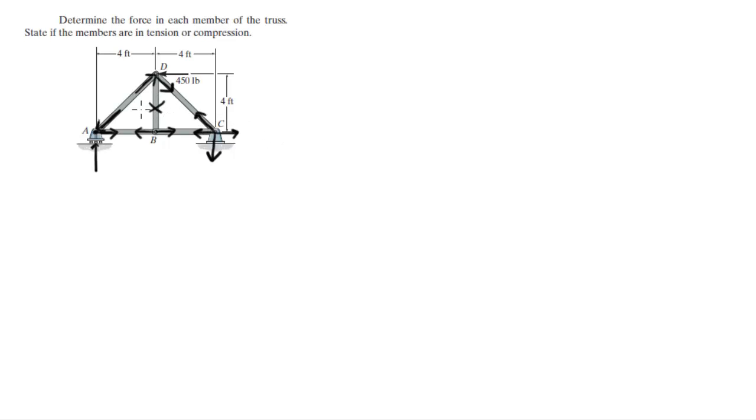Now that we have all the directions of the forces, we can go at each joint and figure each one out. For example, at D, we got this force going up, this is force AD, this is force CD, and this is a 450 pound force.